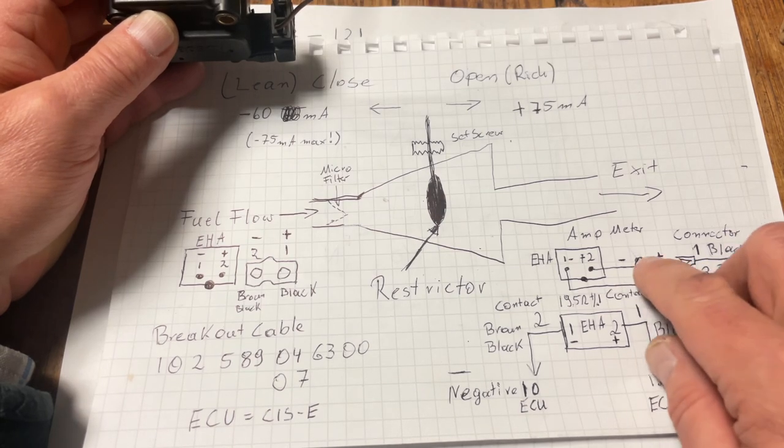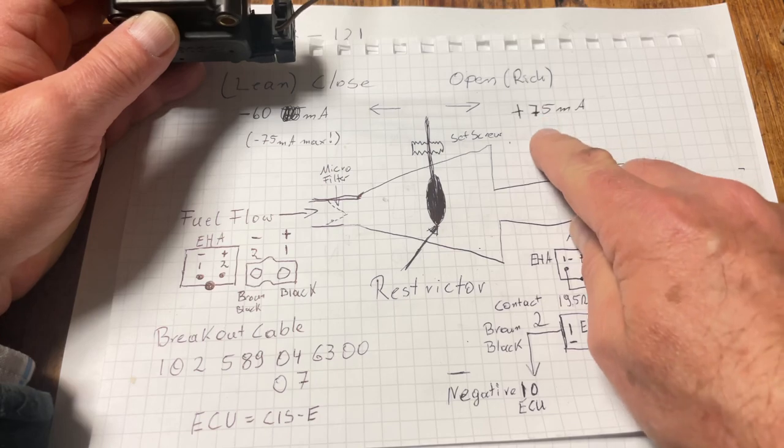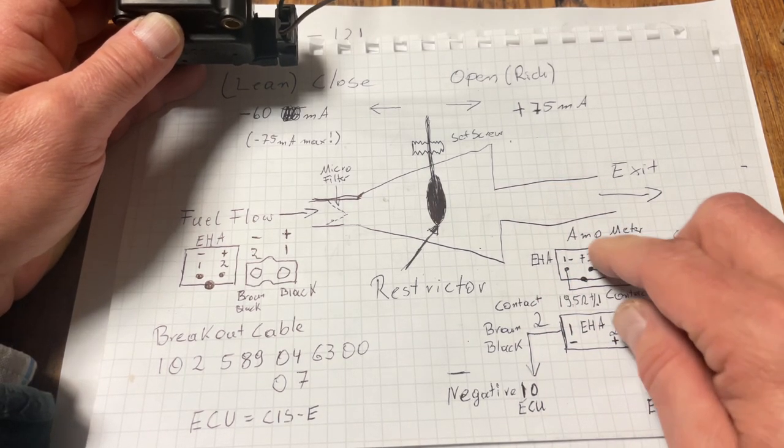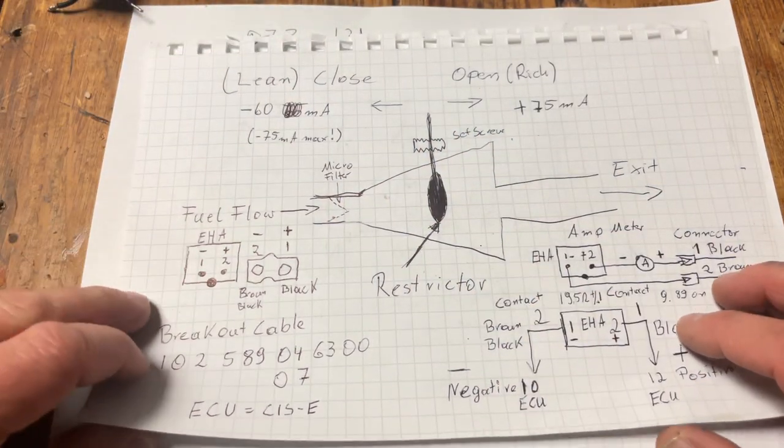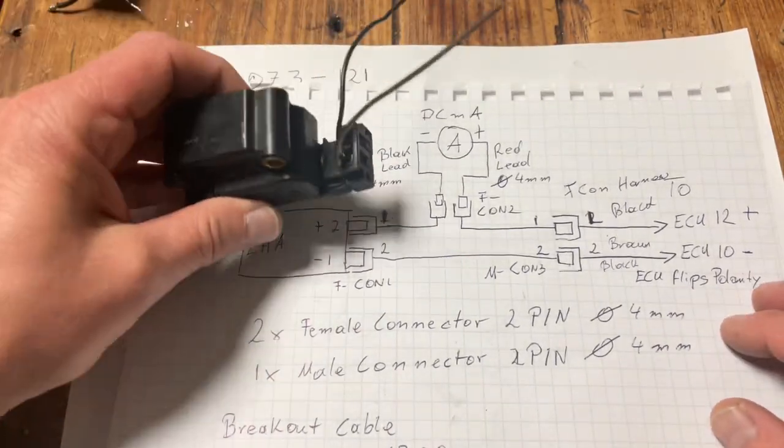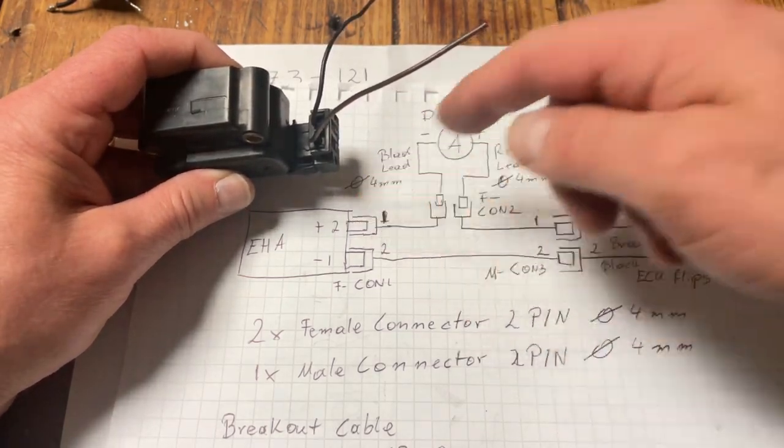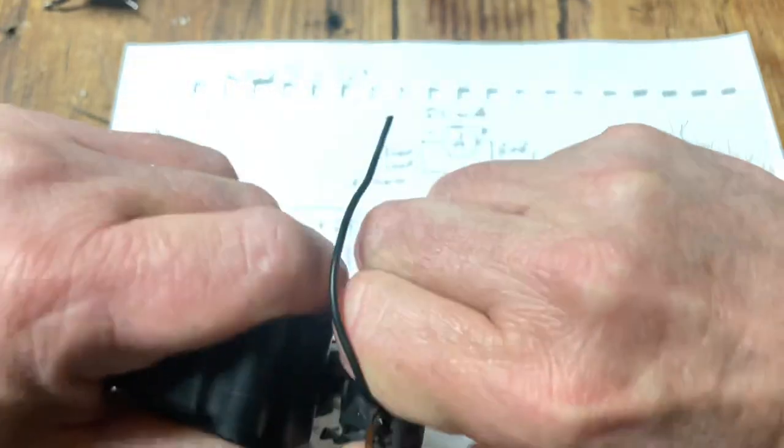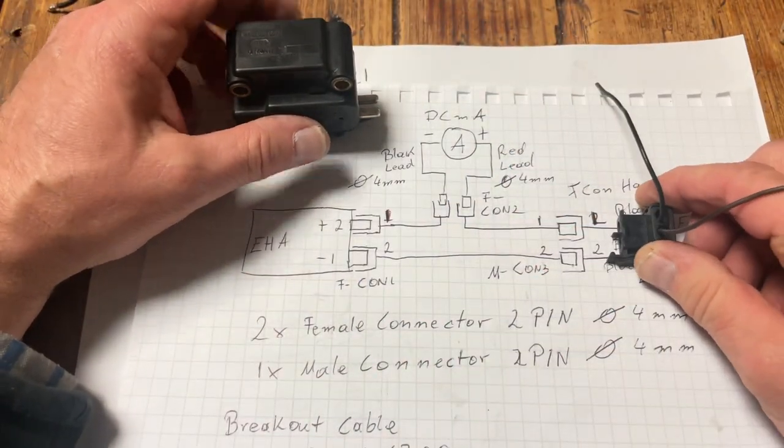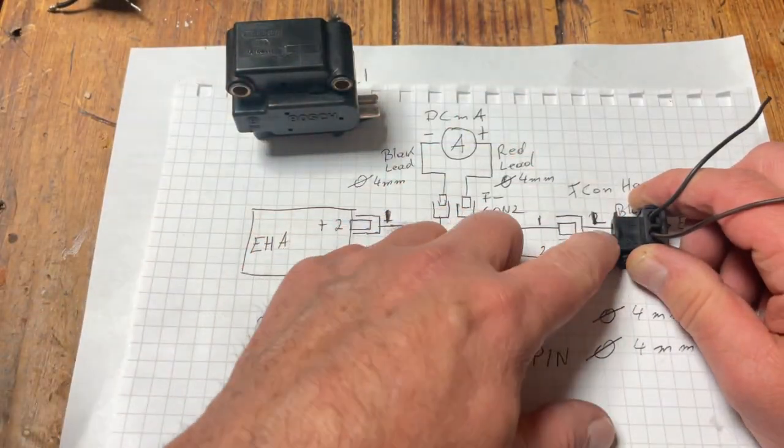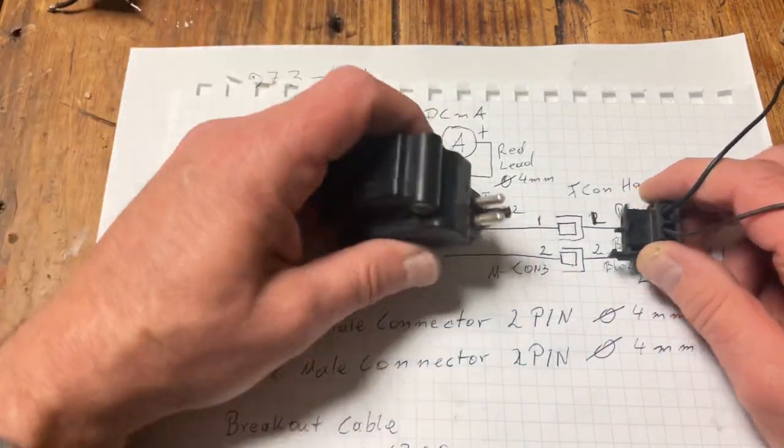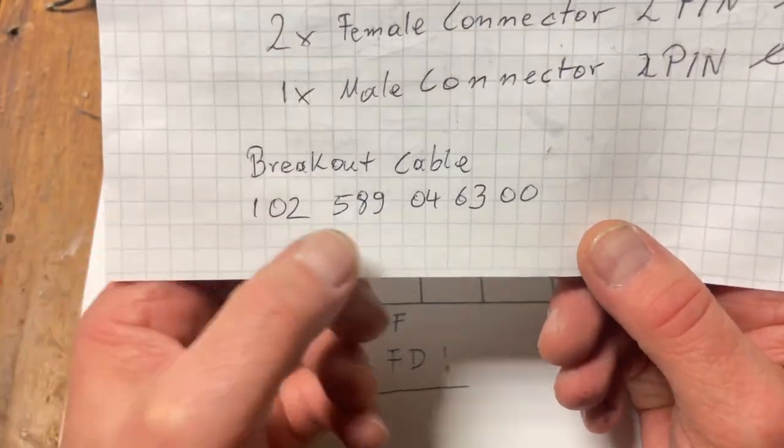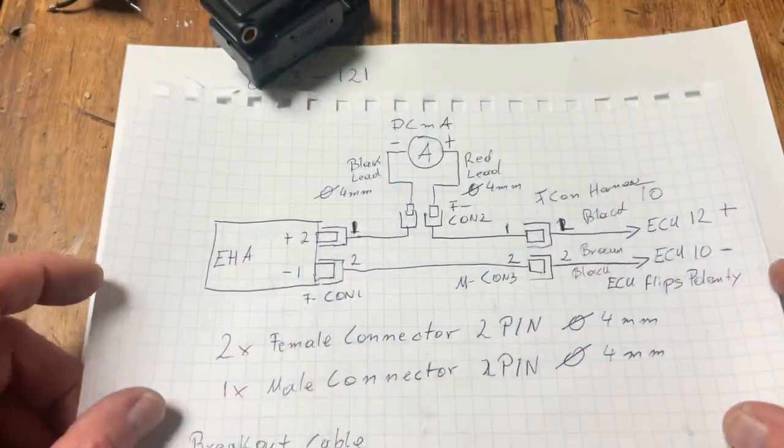When you unplug the ECU on terminal number 12 for black, 12 should wind up here and terminal number 10 should wind up here on this pin. This way you know that they're correctly connected on the ECU side, not that someone swapped it. If this thing will work backwards, you're never going to get your pressure situation correctly or the mixture correctly. So we're measuring here. A regular current flow of a positive indication in a digital meter will indicate up to 75 milliamps, we're going open in a rich direction. When the ECU inverts it, you will read a negative number and we will be closing it. The breakout cable, basically if you were to build one, you will need two of these type of connectors, which are the female ones. That is basically what the cable for Mercedes-Benz looks like, part number 102-589-046300.